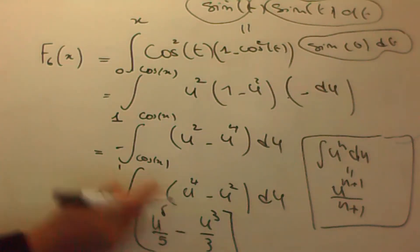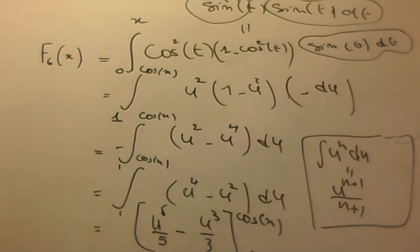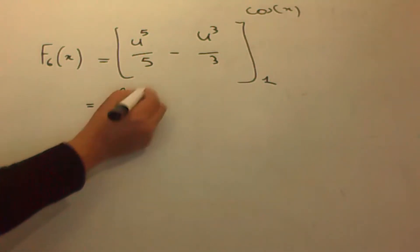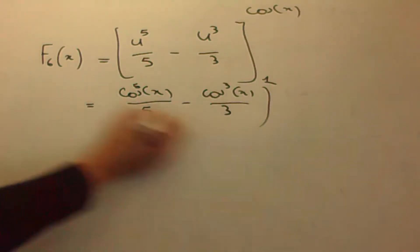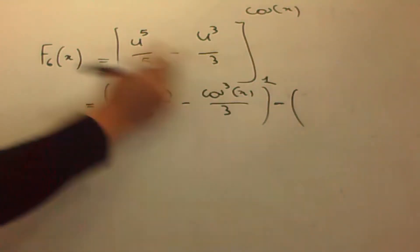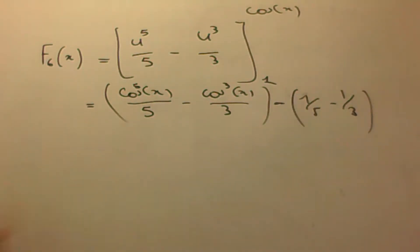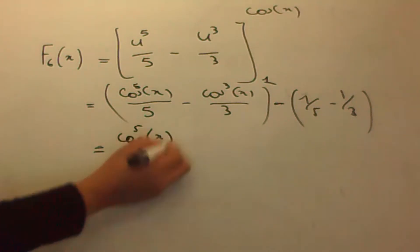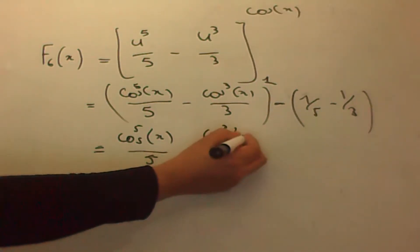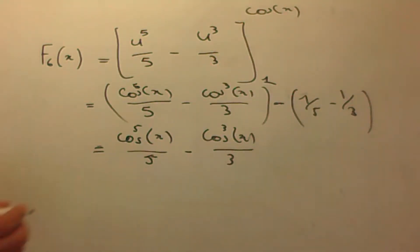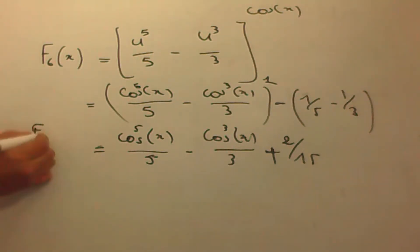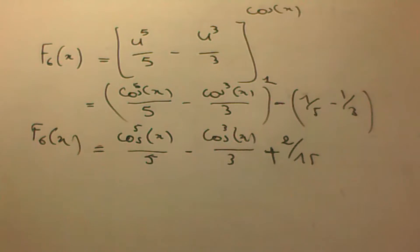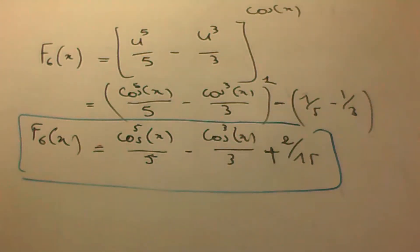Tout ça entre les bornes cosinus de x et 1. Le résultat final est donc égal à cosinus de x puissance 5 sur 5 moins cosinus puissance 3 de x sur 3, moins (1 cinquième moins 1 tiers). On obtient finalement cosinus puissance 5 de x sur 5 moins cosinus puissance 3 de x sur 3 plus 2 quinzièmes. C'est le résultat de notre intégrale f6 de x.